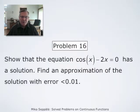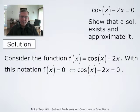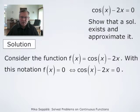In problem 16, we have to show that the equation cos(x) - 2x = 0 has a solution, and we have to approximate that solution with error less than 0.01. Here, we consider the function f(x) = cos(x) - 2x. With this notation, f(x) = 0 means cos(x) - 2x = 0, so we have to show that f takes the value 0 at some point, meaning the solution exists.